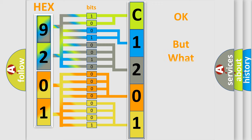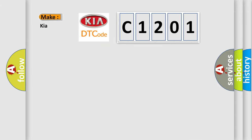The number itself doesn't make sense if we can't understand what it actually means. So, what does the diagnostic trouble code C1201 mean specifically for KIA vehicles?